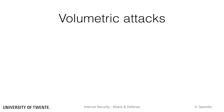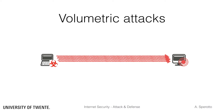A volumetric attack, as the name suggests, aims at generating a large volume of traffic or requests. In this case, there are several ways to tamper with the functionality of the target. One can aim at exhausting resources like the number of available sessions in a server. However, targeting the infrastructure, for example the network connection of the target, is very effective as well.